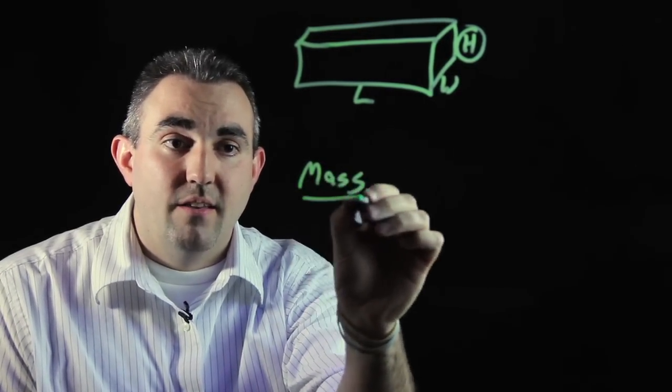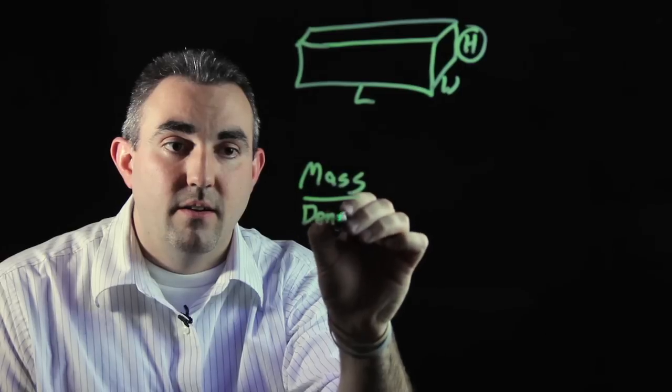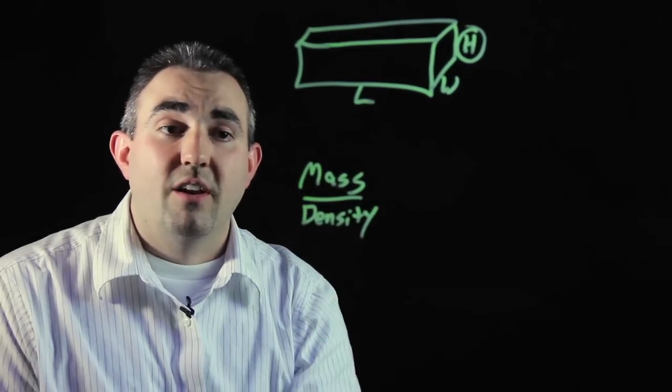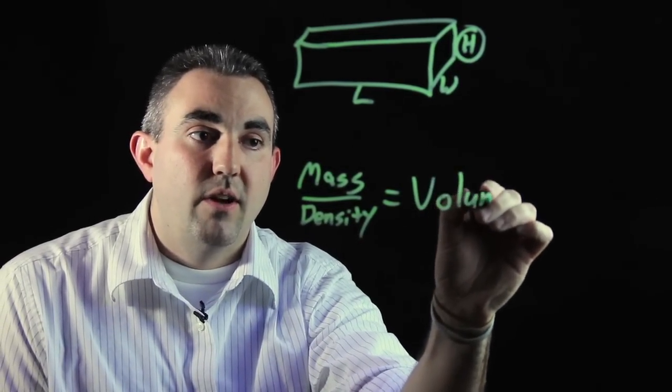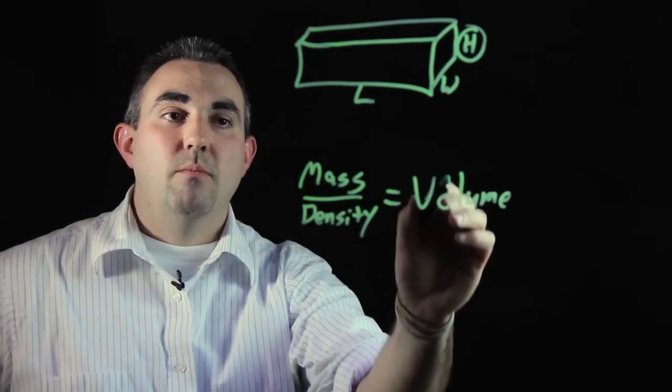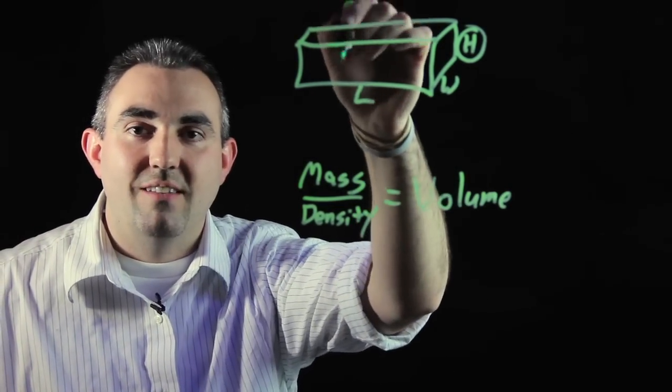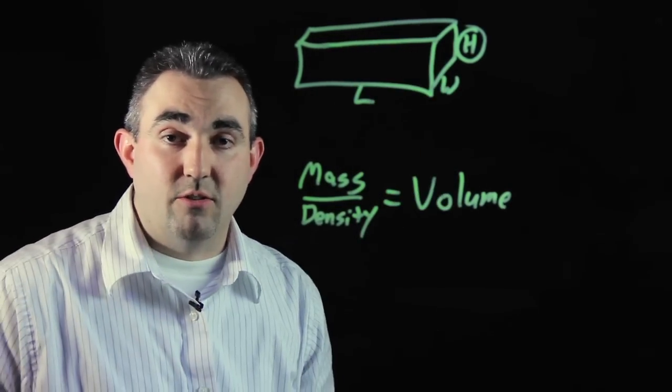If you take the mass divided by the density, you're going to get the volume of this rectangular prism. The volume is how much you can fit inside of this rectangular prism.